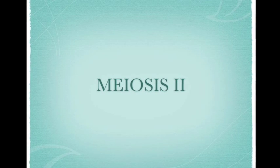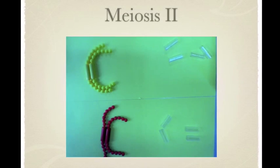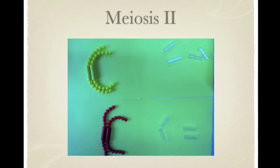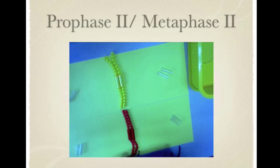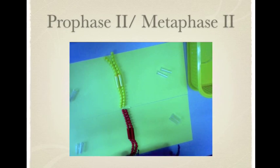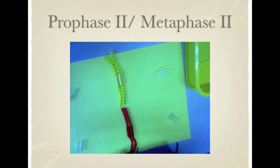During prophase 2, spindle forms and the chromosomes move to the metaphase plate. Metaphase 2 starts when chromosomes are arranged on the plate, but because of crossing over in meiosis 1, the two chromatids of each chromosome are not identical. The kinetochores are attached to microtubules from each side.